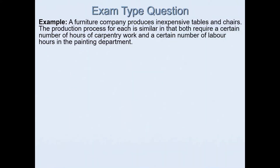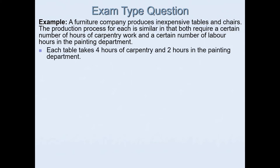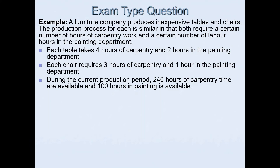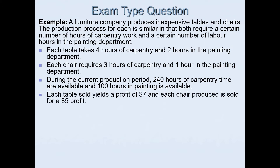We already looked at the first part of this problem: a furniture company produces inexpensive tables and chairs. Both require carpentry work and painting hours. Each table takes four hours of carpentry and two hours in the painting department; each chair requires three hours of carpentry and one hour in painting. During the current period, 240 hours of carpentry and 100 hours of painting are available. Each table yields a profit of seven dollars and each chair a profit of five dollars.